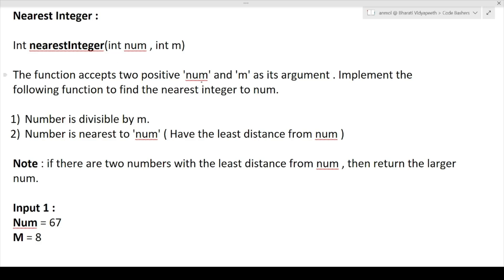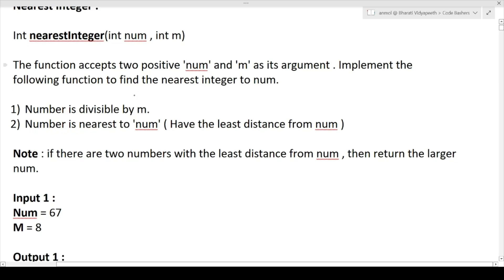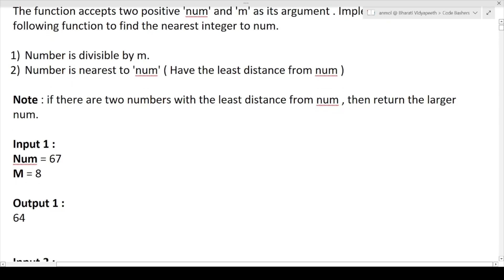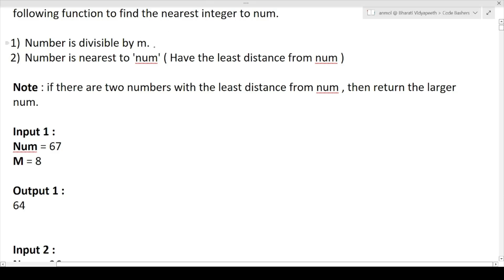The function accepts two positive numbers: num and m. We have to implement the function to find the nearest integer. The nearest integer is a number that is divisible by m, and it should be nearest to num. So we are given two input numbers, num and m, and we have to find a third number which is divisible by m and nearest to num.